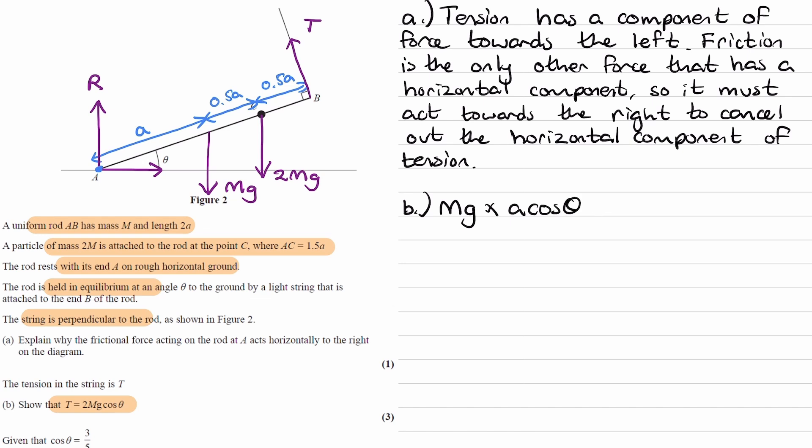And then we'll have the same kind of thing for this force here, the 2mg. It'll be this force multiplied by the perpendicular distance, which is this, and that length there would be 1.5A times cos theta. You can get that by just doing SOHCAHTOA with this triangle. Same thing for this triangle, just use SOHCAHTOA as a right-angled triangle, you'll end up with this length here being 1.5 cos theta. So the 2mg would be multiplied by 1.5a cos theta.